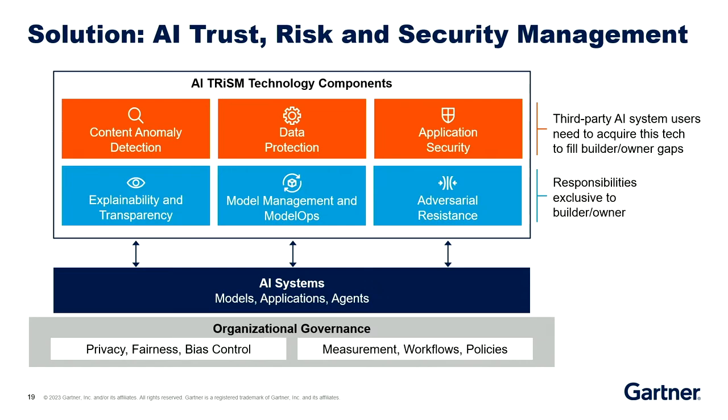So what can you do? It's not all bad news — there's plenty you can do, and you just have to take one step at a time. We came up with a framework called AI Trust, Risk, and Security — AI TRiSM. The first thing you have to do is set up your organizational governance — you can't manage this out of security or IT alone. You need all the participants involved: set up your measurements, policies, workflows, define what's private and what's bias. Then you can go get the technology components. The market is a little like cybersecurity 10-15 years ago — still pretty fragmented but starting to consolidate.